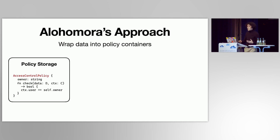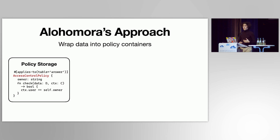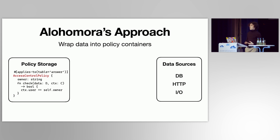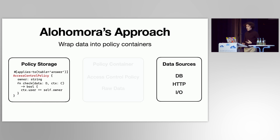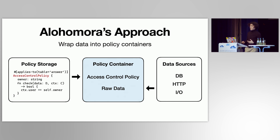The developer would also add a function that checks whether the currently authenticated user is the owner of the data, and write an annotation to specify which data this policy applies to. When data comes into Alohomora from different data sources, Alohomora developers annotate some of those sources, so Alohomora automatically associates the policy with the data and puts it into a policy container.